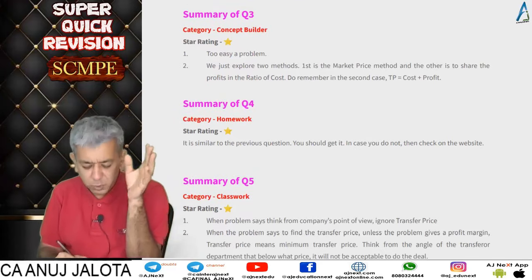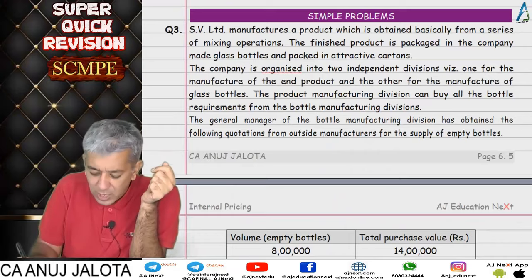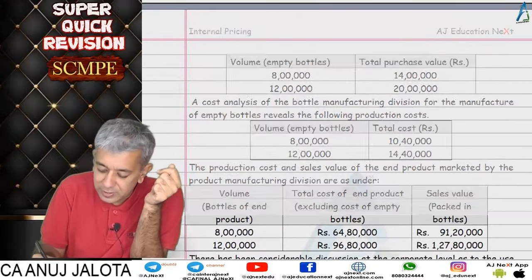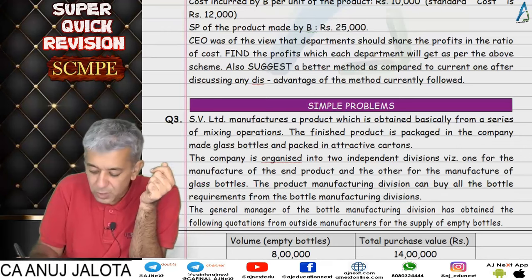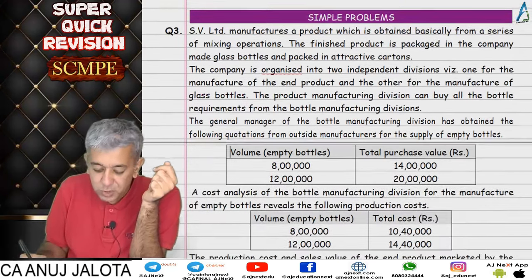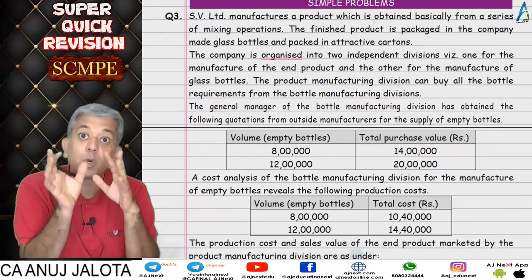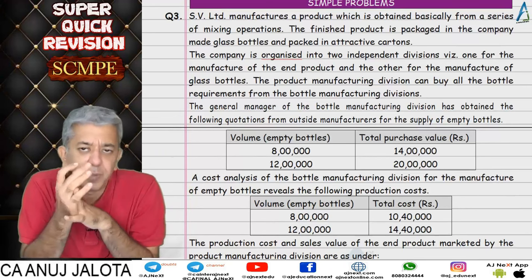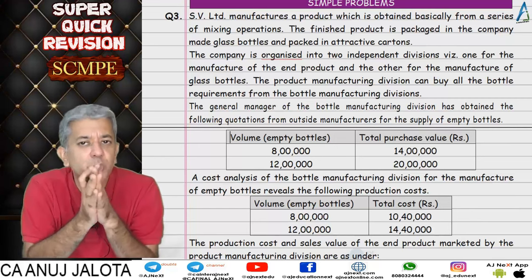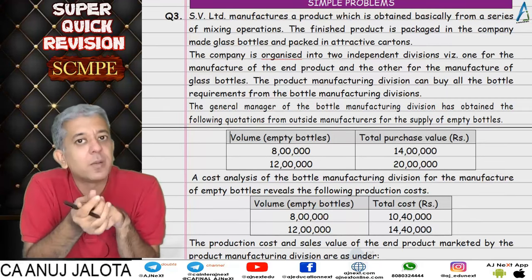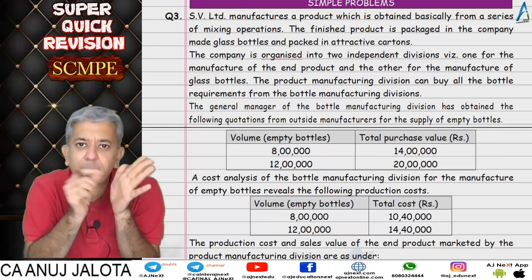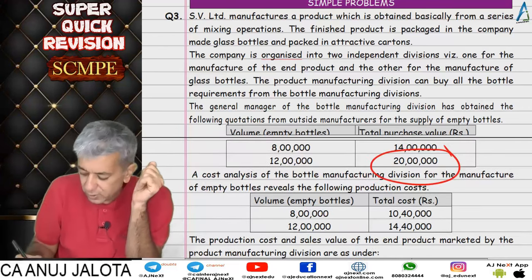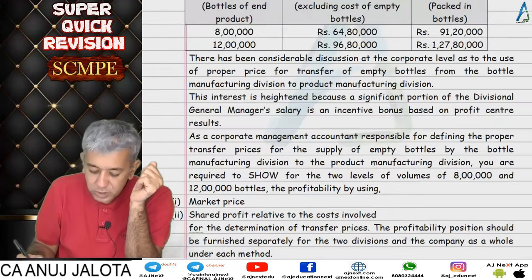Question number three had a transferring division making empty bottles and a product manufacturing division filling those bottles and selling in the market. We were asked to make income statements based on two criteria: the market price method — where the rate at which empty bottles sell in the market becomes the transfer price — and the shared profit in the ratio of cost method.